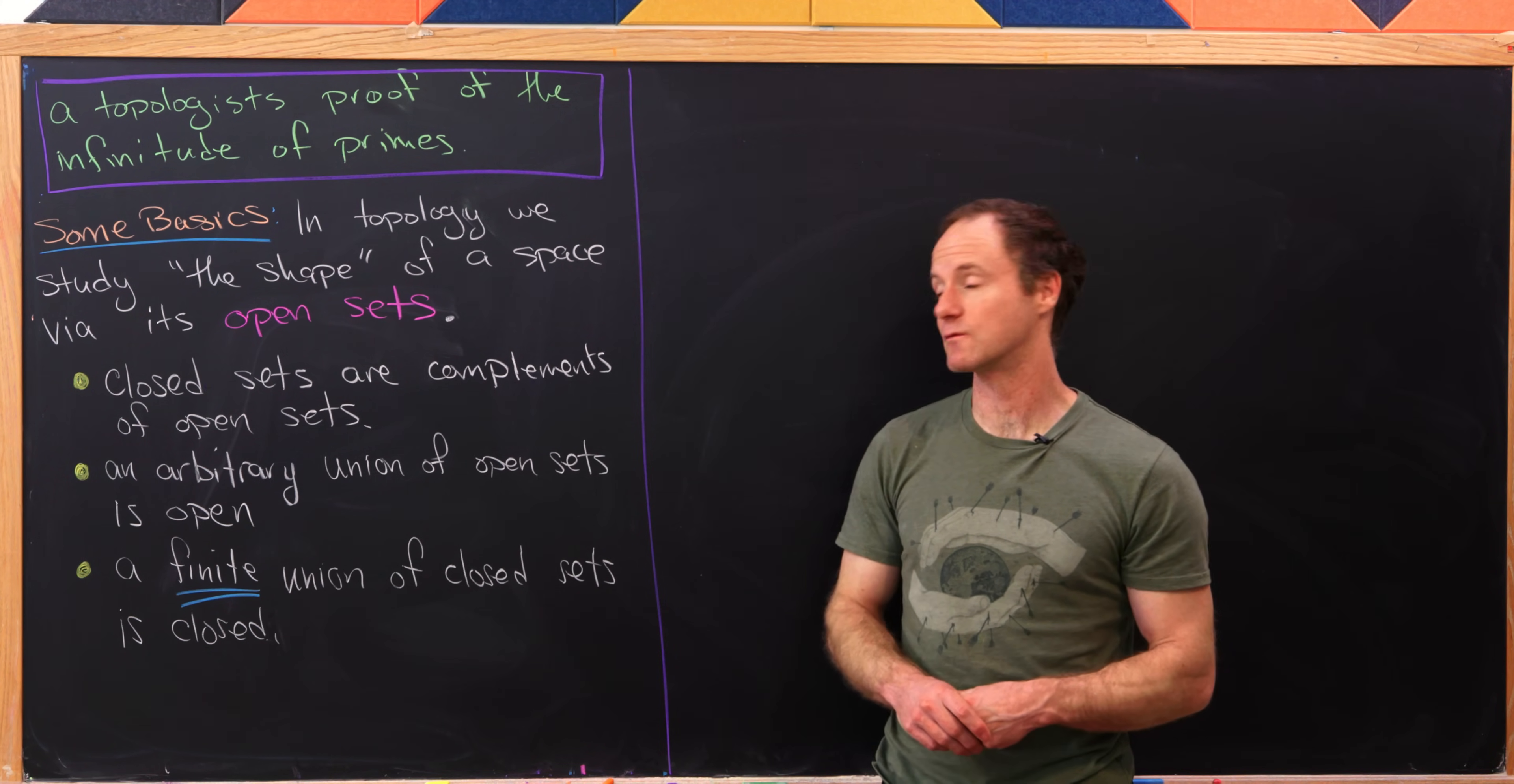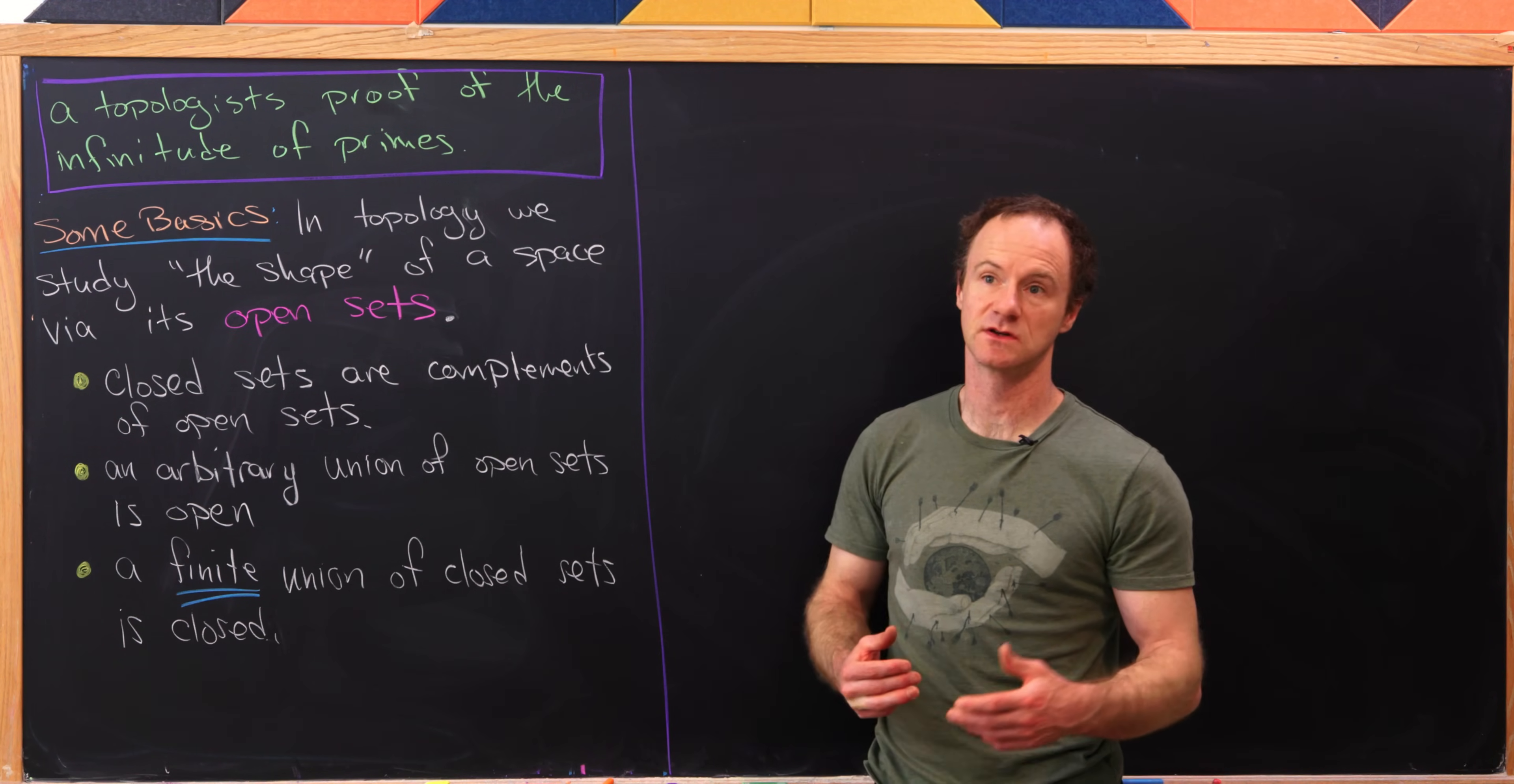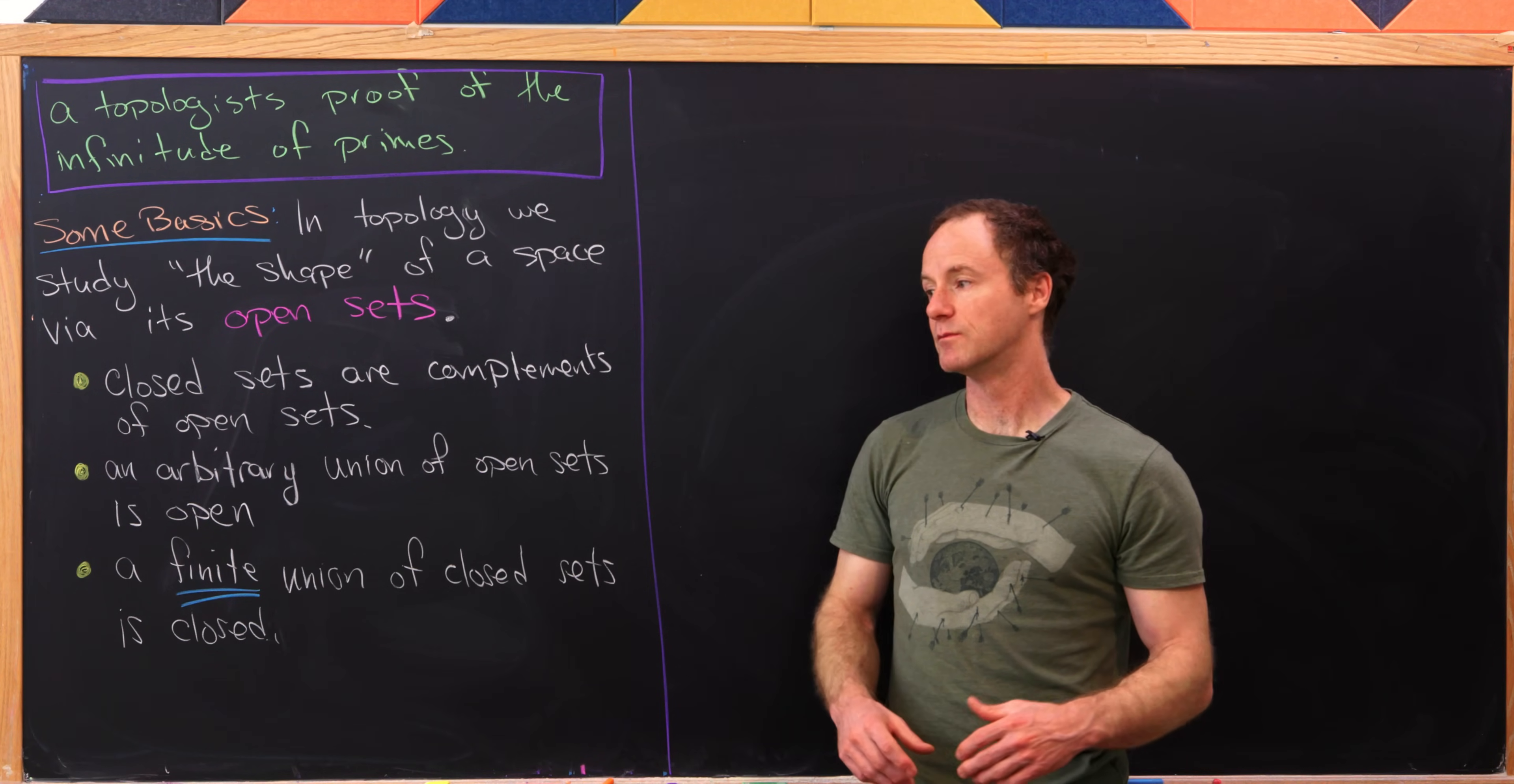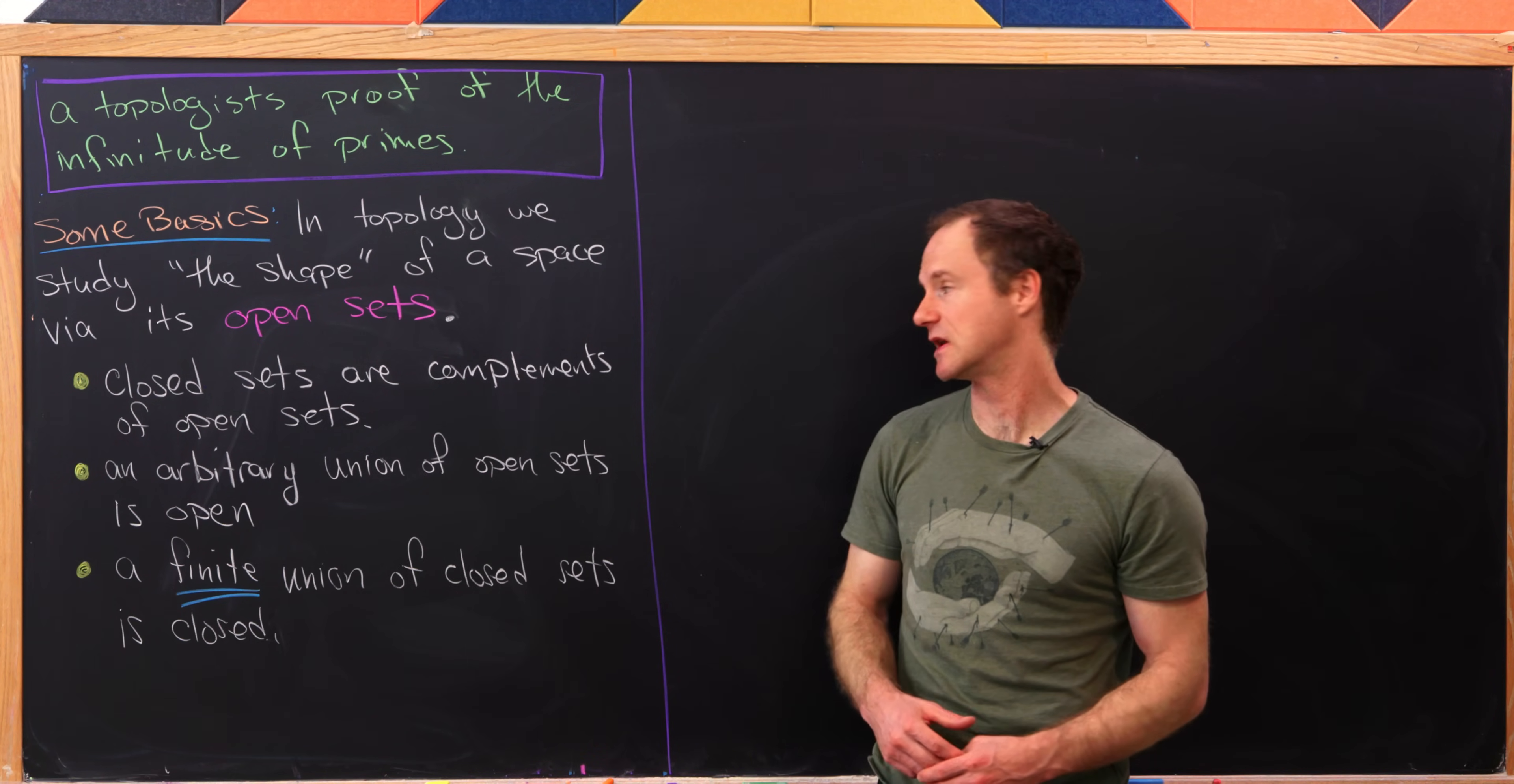But we don't have the same result for closed sets. In fact, a finite union of closed sets is closed. And perhaps for some examples, an infinite union of some closed sets will be closed. But you could also cook up some examples of an infinite union of closed sets not being closed.